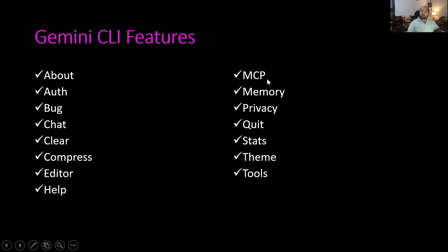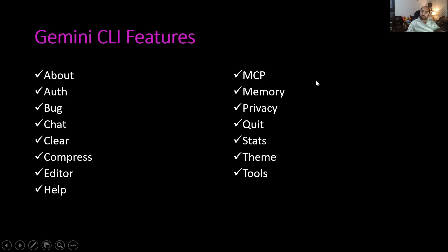MCP is another component — MCP stands for Model Context Protocol. In case you are not aware what MCP is, I have already created a series around it. Using MCP, we can provide capability to the LLM to connect to external data sources such as Selenium MCP, Playwright MCP, or REST MCP servers. Memory is to give the context — we can explicitly provide memory to Gemini CLI and it will be able to remember that particular context.